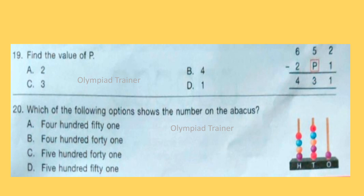Question 20: Which of the following options shows the number on the abacus? Answer is Option A, 451.